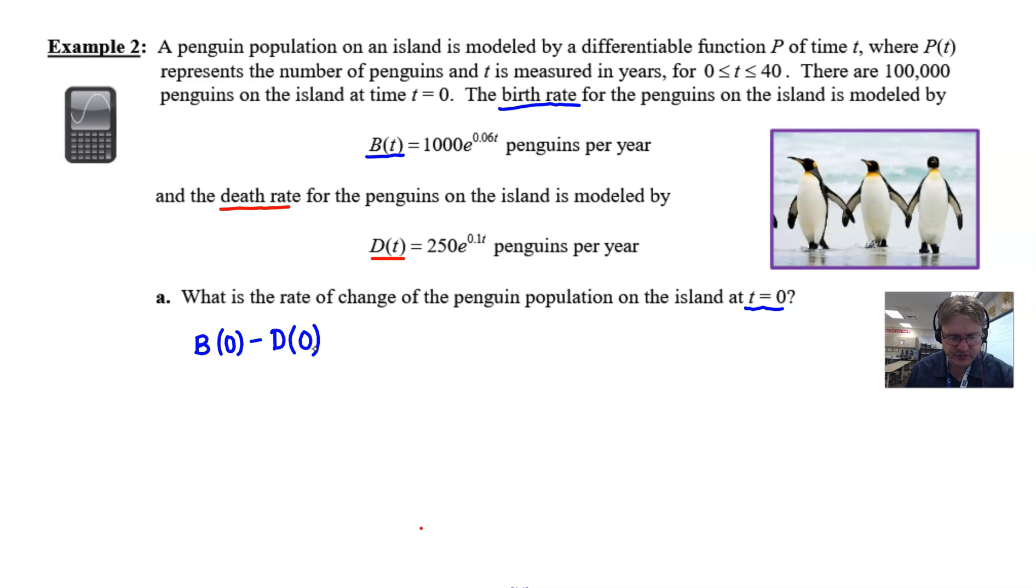Now if you want, you could certainly call this a name, and there's nothing wrong with that. If it says what is the rate of change, maybe we want R(t), maybe we want P'(t) for penguins. We could call this some kind of a function, and if I'm going to evaluate that function at zero, that's perfectly fine. But it's not so important that this is named. What's more important is that this is going to give us our result. Let's go ahead and take a look at the graphing calculator to answer this.